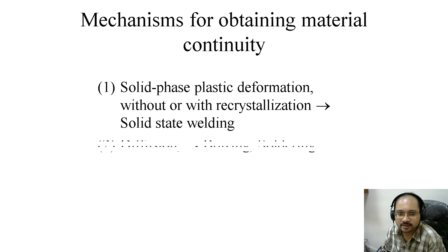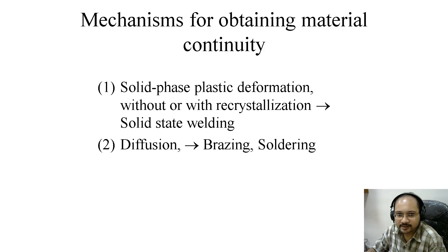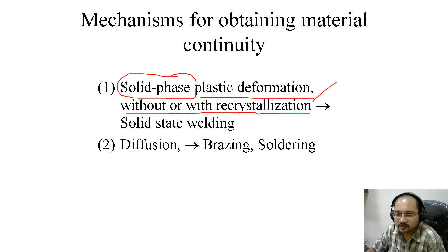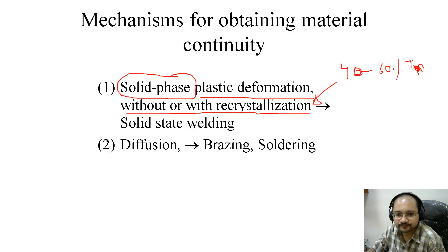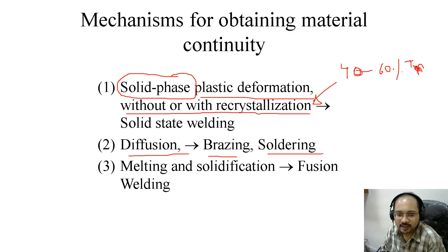Mechanisms for obtaining material continuity: the different mechanisms are, number one, solid phase plastic deformation, which is with or without recrystallization. Recrystallization temperature is 40 to 60 percent of the melting point — so it is not melting, it is just below that range. The next mechanism is diffusion, which comprises brazing and soldering. Then comes melting and solidification, which encompasses fusion welding.